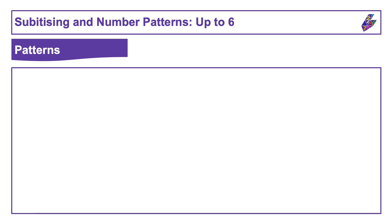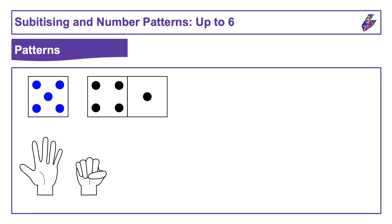You might have noticed that some things were just in one colour: all blue, all black, all white, all red, and other things had more than one colour.